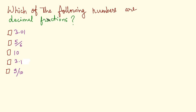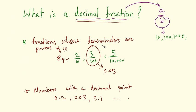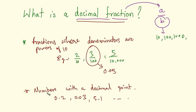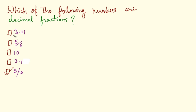Now, find out which of the following numbers are decimal fractions. If we look at our definitions, fractions where denominators are powers of 10 are decimal fractions. So 9 by 10 is a decimal fraction. 5 by 6 is not a decimal fraction because the denominator is not a power of 10. Numbers with a decimal point are also decimal fractions, so 3.01 and 3.1 are decimal fractions.